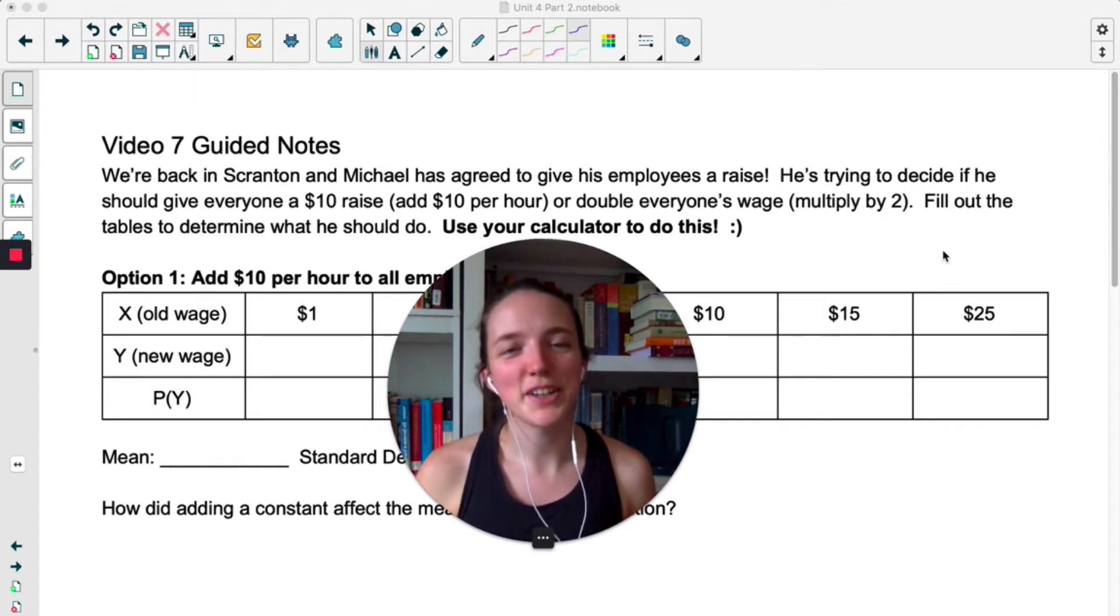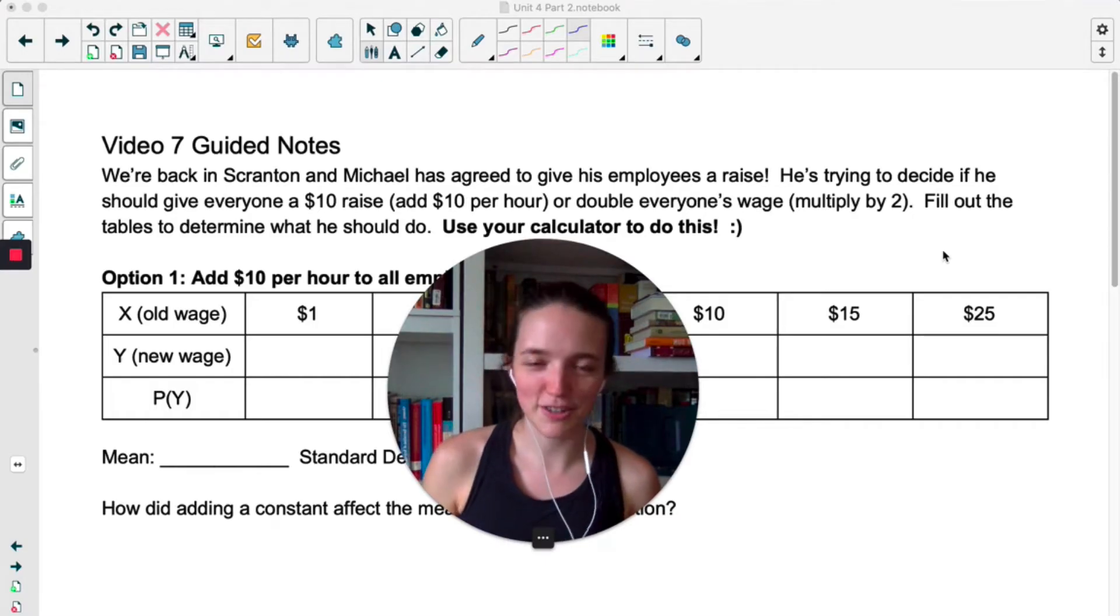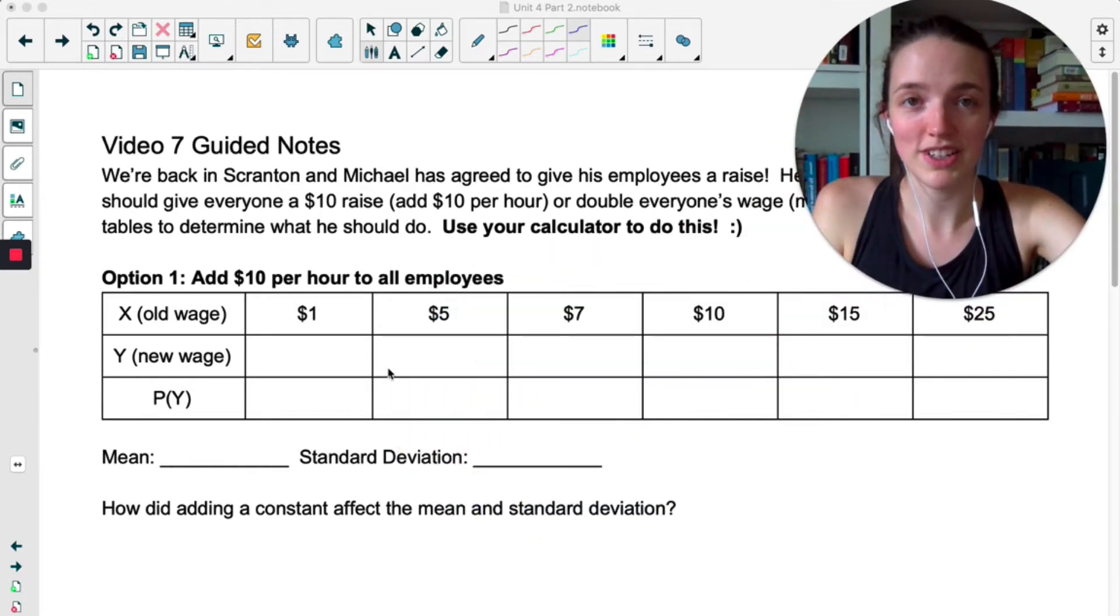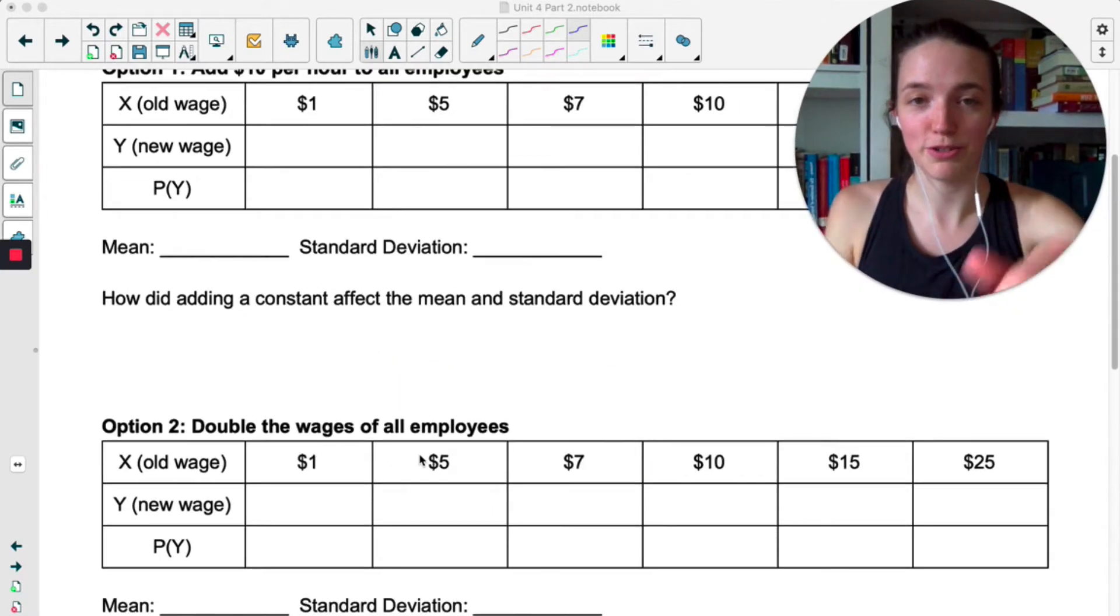Alright, so in this video we are back to Scranton. Michael has finally agreed to give his employees a raise and he's now trying to decide if he should give everyone the same amount, like $10 added to their hourly rate, or if he should double everyone's wage. So we've got two different options here. Option one is to add $10. Option two is to double the wages.